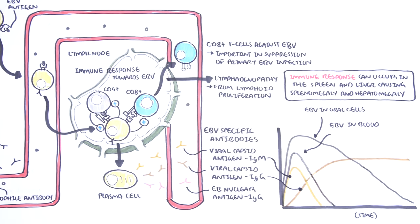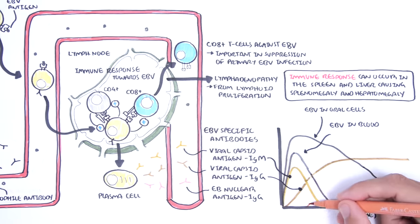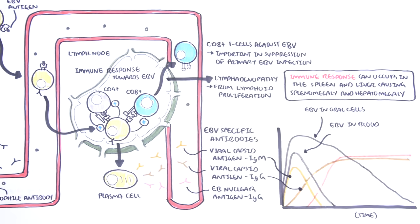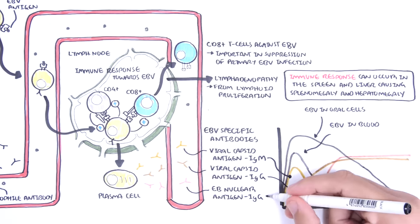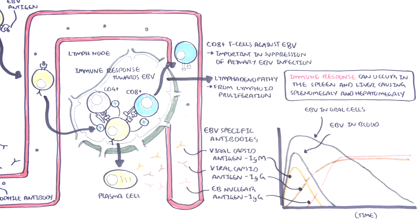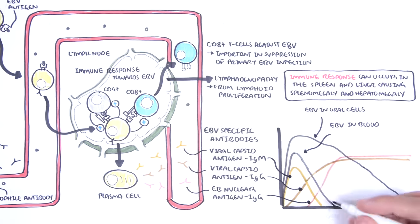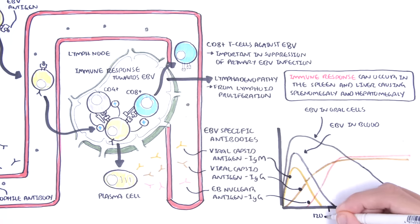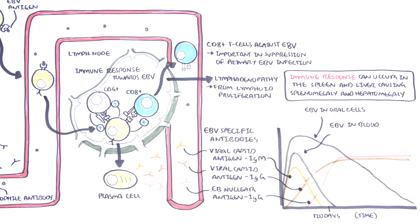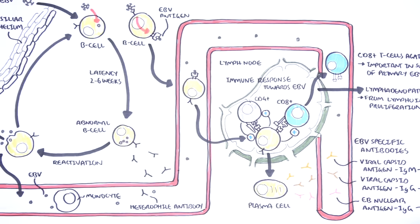Eventually, when the immune system is controlling the Epstein-Barr virus infection, the plasma cells are able to produce Epstein-Barr nuclear antigen IgG, which is a marker of the resolution of the infection and a marker for a previous Epstein-Barr virus infection. It is important to keep in mind that IgM is high in the blood for up to 120 days, so technically it can be a marker of a current infection or a marker of a recent infection.